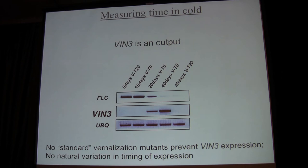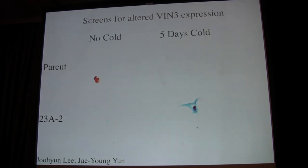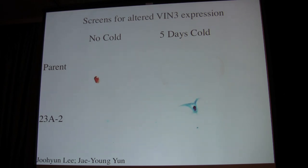One of the ways we're approaching the cold-sensing question is finding more subtle classes of mutants — perhaps those that shift the timing of how much cold it takes. That might lead us to the cold-sensing system. An output of cold is the turning on of the VIN3 gene after a long period of cold in the wild type. So we've been screening for mutants where that time frame has shifted. In wild type, no cold means no VIN3 expression — five days doesn't do anything. But we now have mutants where just a short period of cold starts the process and turns on VIN3. So we're now identifying those genes with the hope that we'll get to the cold-sensing mechanism.